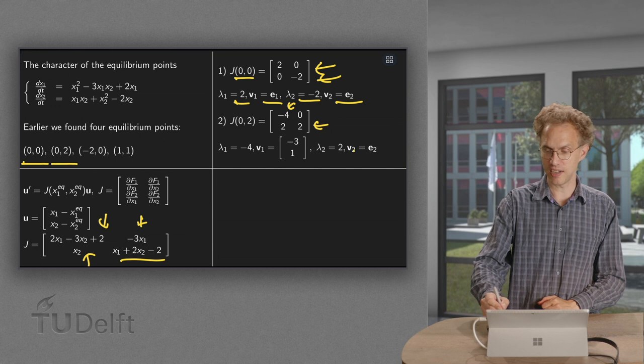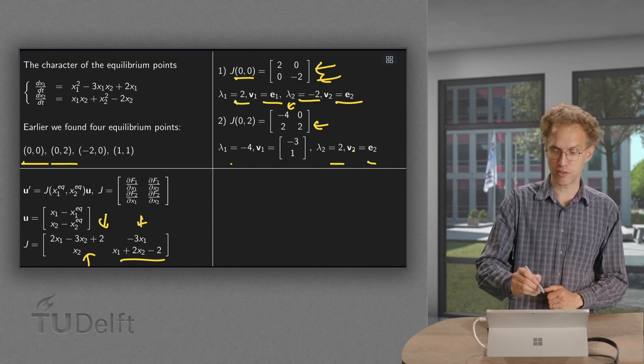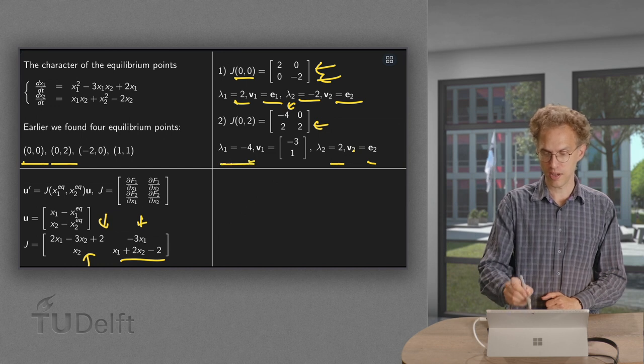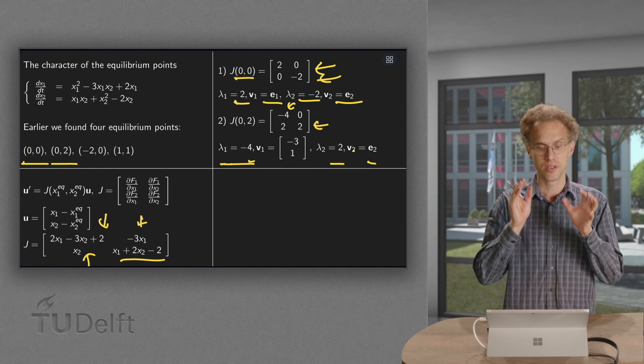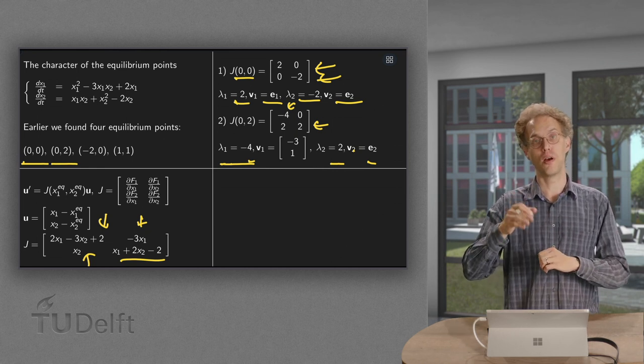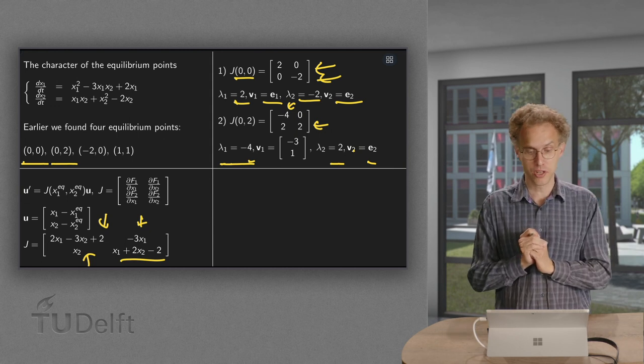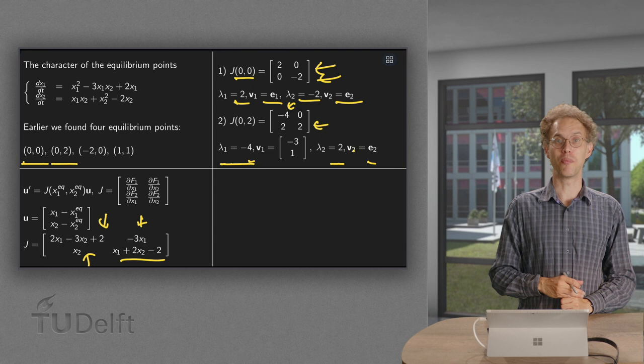Again it's easy to read off the eigenvalues because we have a triangular matrix. So they are -4 and 2. For 2 it's immediately clear that e2 is the eigenvector. And for -4 you have to do a bit more work in order to find the eigenvector (-3,1). And again we have eigenvalues above and below 0. So again we have a saddle point. Two equilibrium points done.